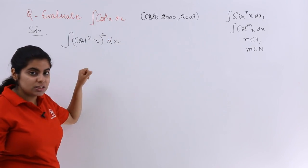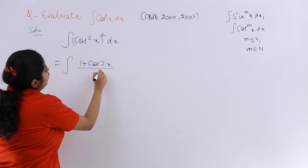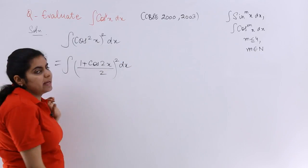Now what is cos square x formula? It is nothing but 1 plus cos 2x whole over 2 and whole square outside already there.